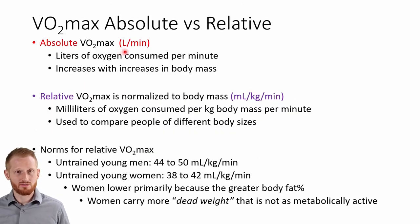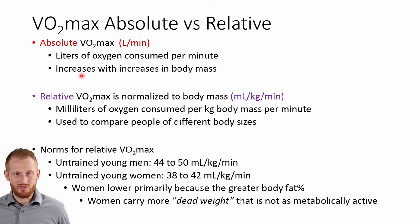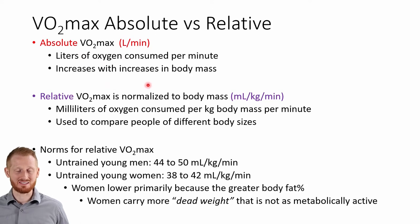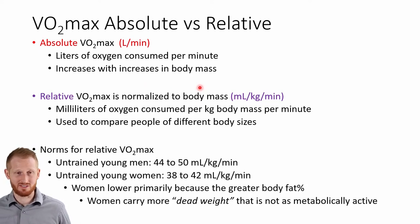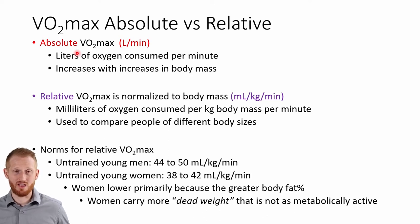Starting with absolute VO2 max, the units are liters of oxygen per minute of activity. It's called 'absolute' because it's not made relative to anything. When you measure VO2 this way, it increases with the size of the person, so a large person will always have a greater absolute VO2 max than a smaller person regardless of fitness level.